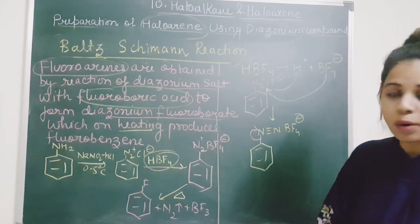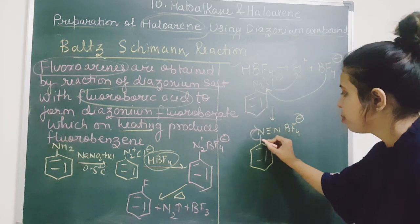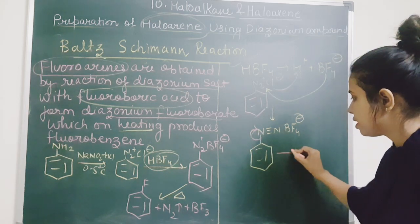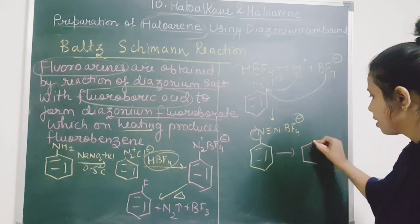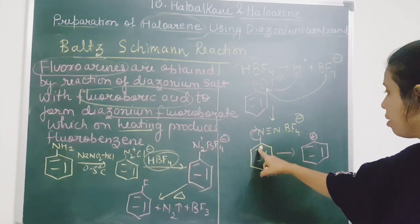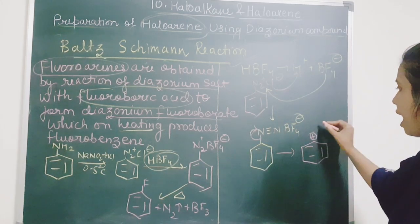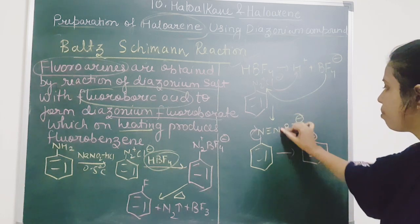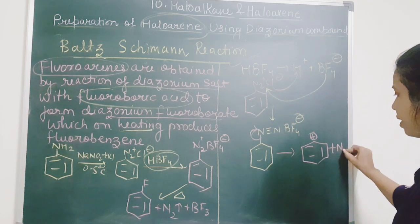This nitrogen will be moving out, taking up both the electrons and it is going to generate positive charge over the ring. Positive charge over the ring and we have BF4-. N2 is removed.